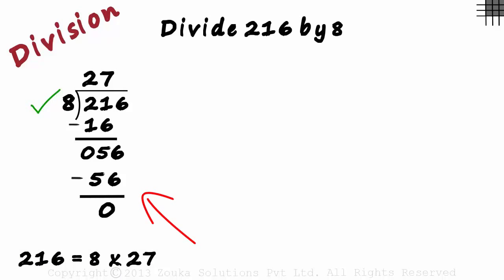What else can we say after looking at this process? Is 27 a factor of 216? Yes, as we can write 216 as 8 multiplied by 27. 27 is also a factor of 216.